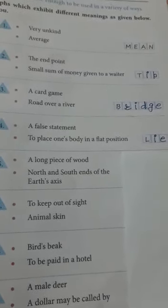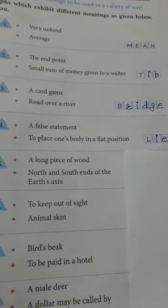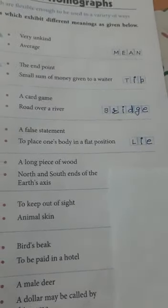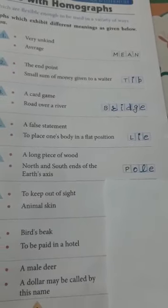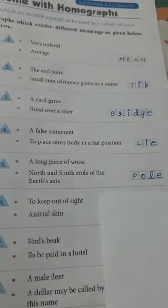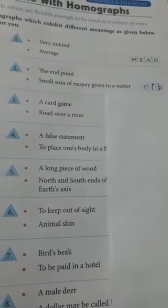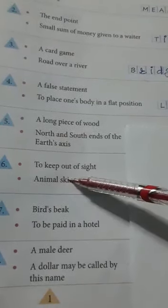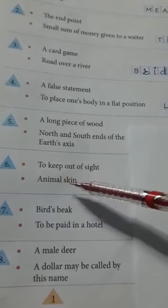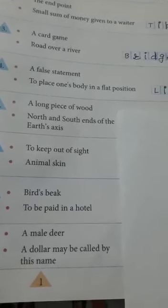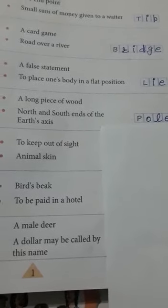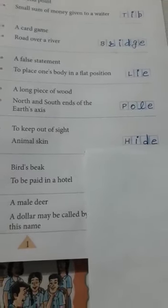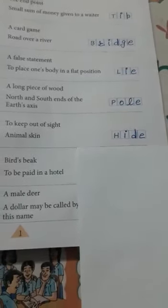Next is 'a long piece of wood' and 'north and south ends of the earth's axis' — what do we call it? We call it 'pole.' Next is 'to keep out of sight' and 'animal skin.' When something is hidden from our eyes, or referring to animal skin — what do we call it? We call it 'hide.'